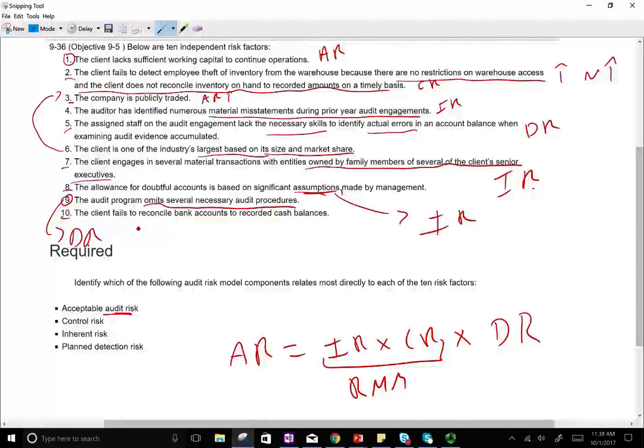Number 10, the client fails to reconcile accounts to recorded cash balance. That's a control risk. Basically, the company is not properly protecting their cash because bank reconciliation is a form of control. Cash could be stolen, missing, lost without us knowing. Therefore, the company is not implementing the proper control to protect their cash. So this deals with control risk.